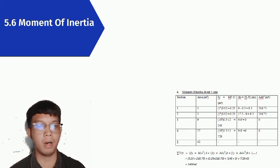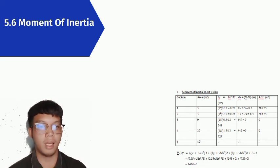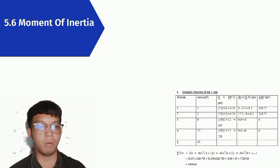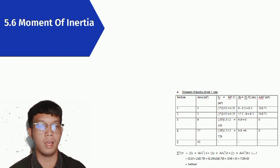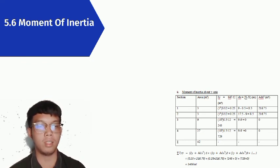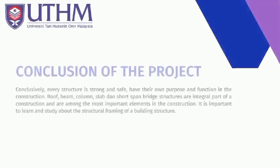The moment of inertia about the x-axis, after calculation, gives 48.6 m to the power of 4. Based on these results, the structure is considered strong enough for vehicles to pass over it.